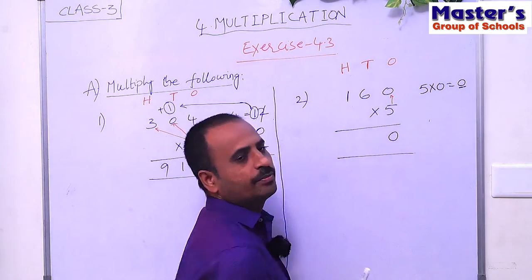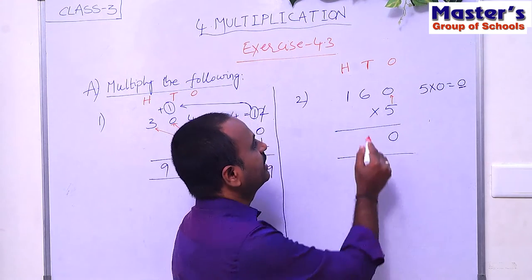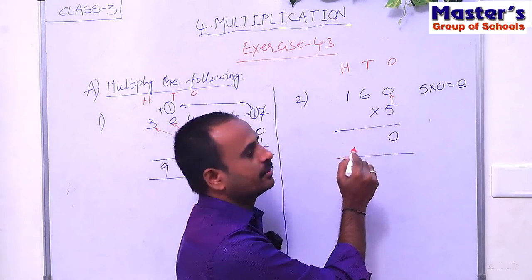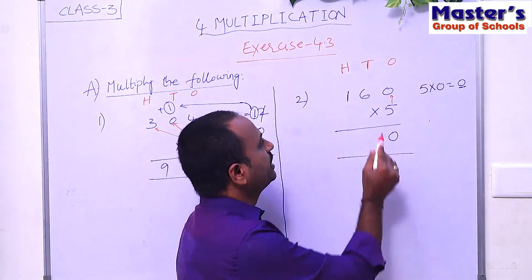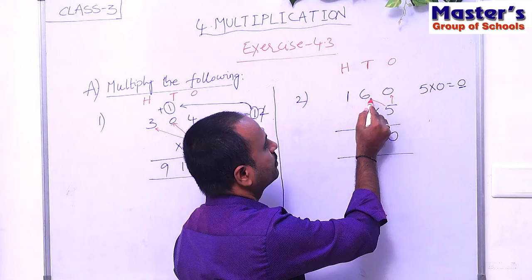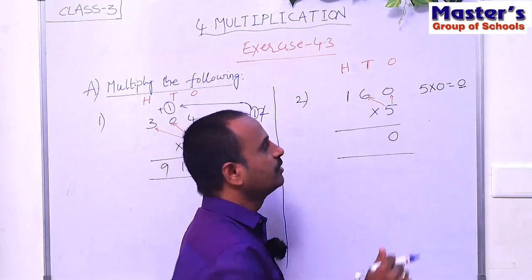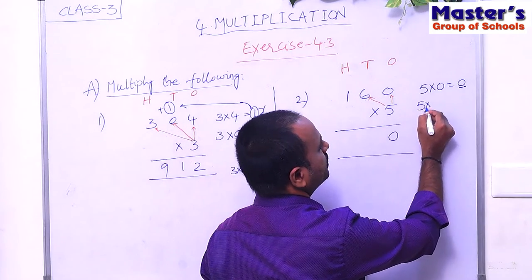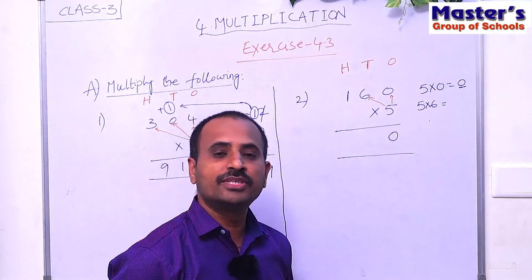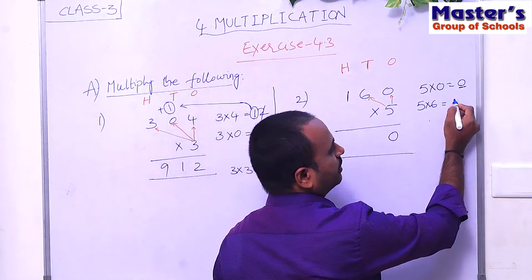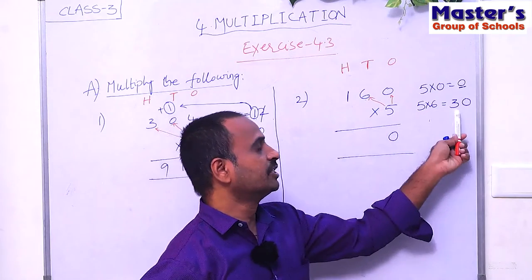Ones place is done, now go to tens place. Multiply the digit in tens place with 5. The digit in tens place is 6, so multiply 6 with 5 — that is 5 × 6. Children, 5 sixes are 30, and 30 is a two-digit number.